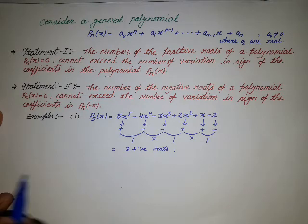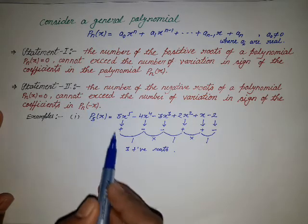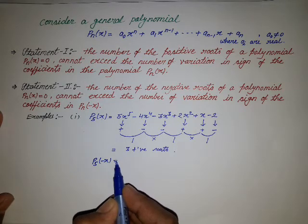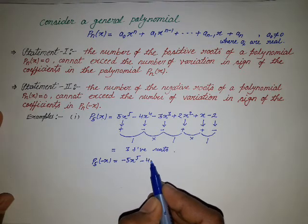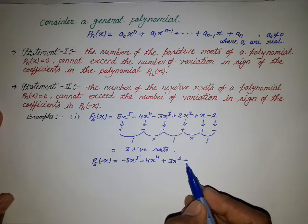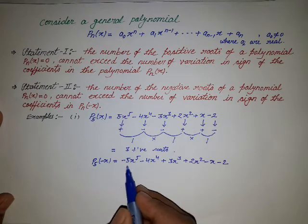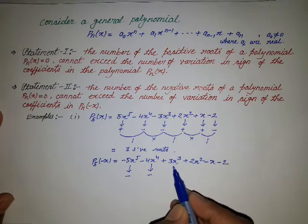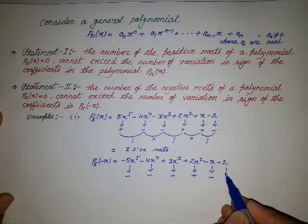Now we look for the negative roots of this polynomial. We replace x with −x. The polynomial becomes: −5x⁵ − 4x⁴ + 3x³ + 2x² − x − 2. The coefficient of the first term is negative, the second is negative, the third is positive, the fourth is positive, the fifth is negative, and the last term is negative.